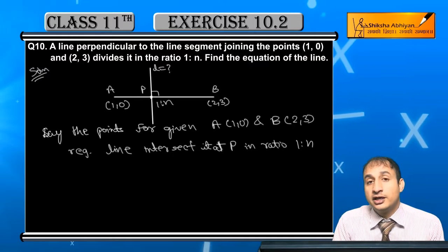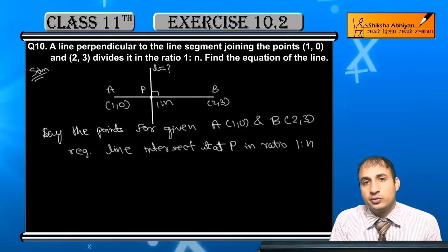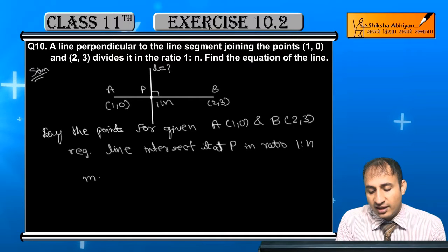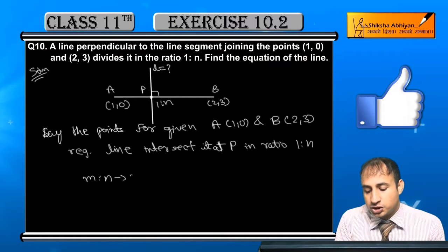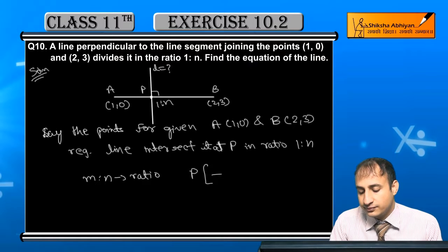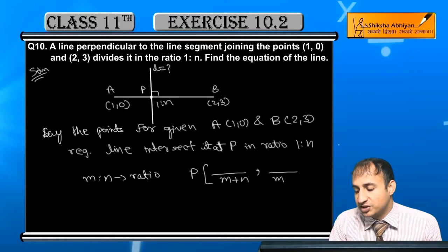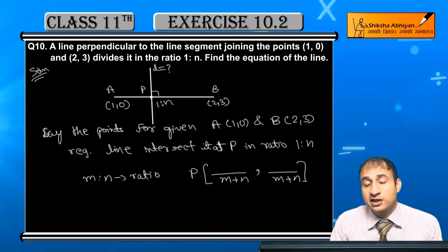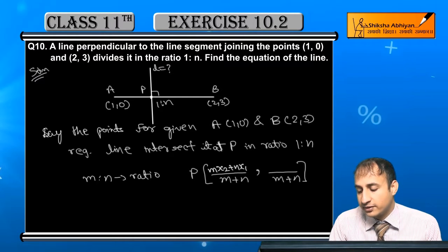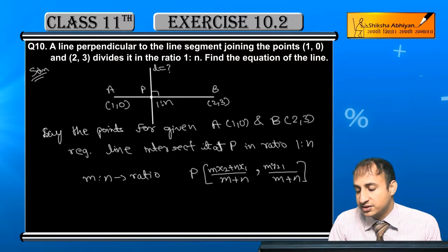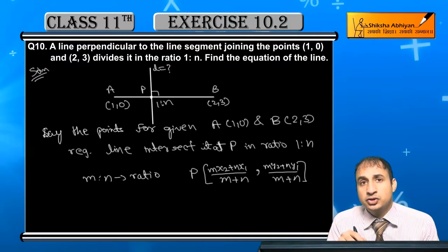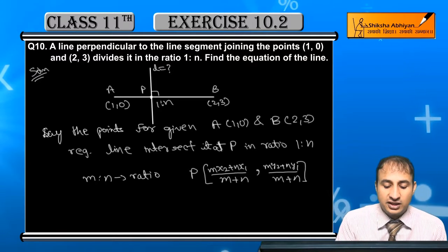So P's coordinates we can find using section formula from class 10. I'll recall section formula: if ratio is M is to N and two points are (x1,y1) and (x2,y2), then P's coordinates are (M·x2 + N·x1)/(M+N), (M·y2 + N·y1)/(M+N). Here M is 1 and N is n, x2,y2 is (2,3) and x1,y1 is (1,0).